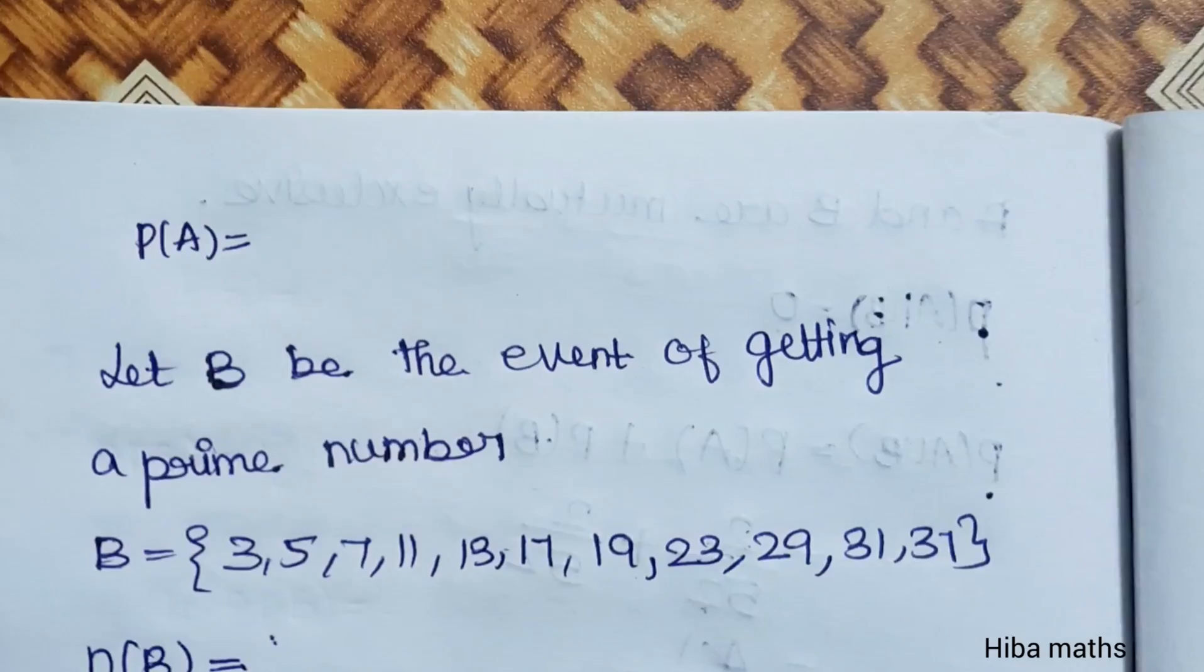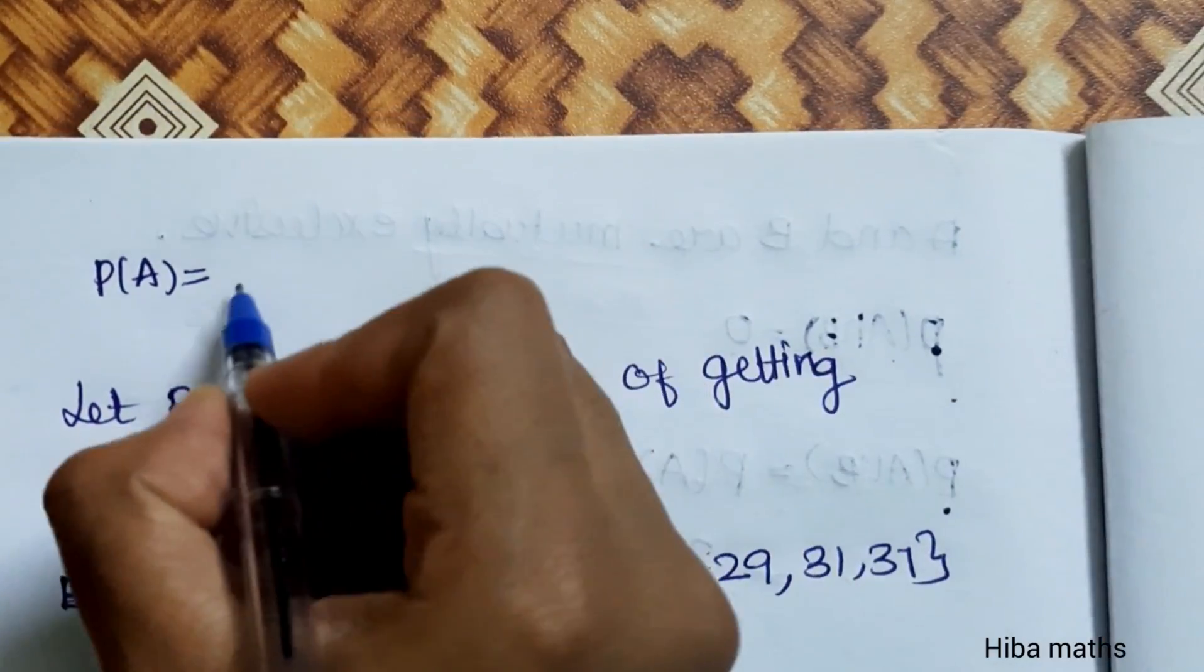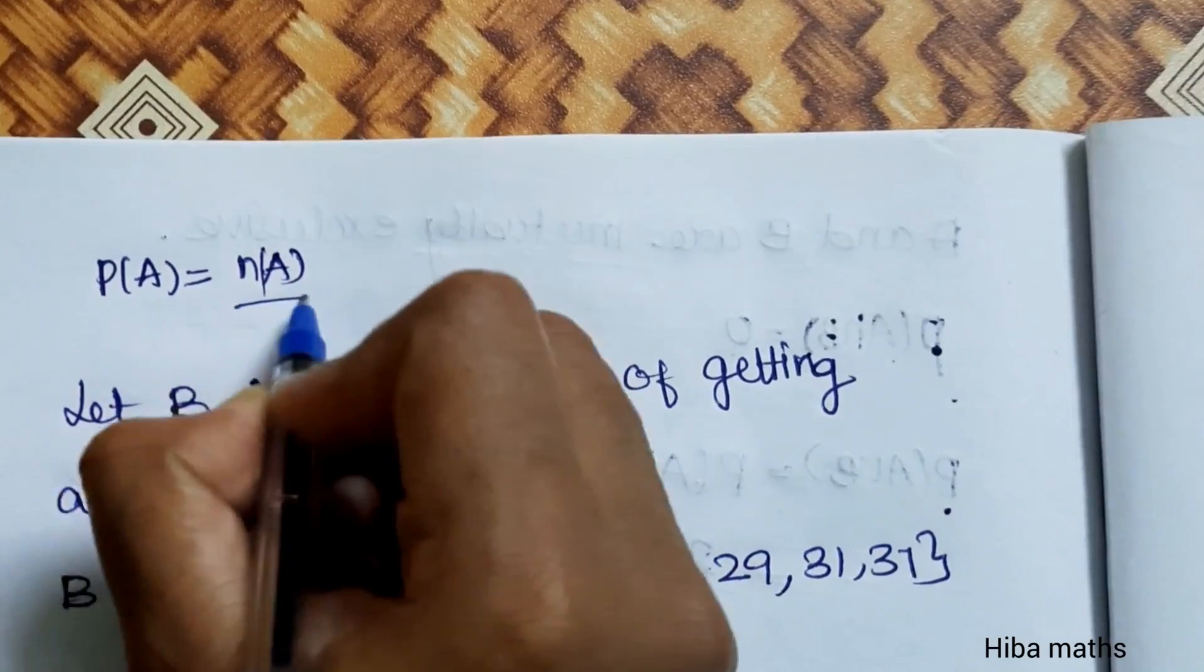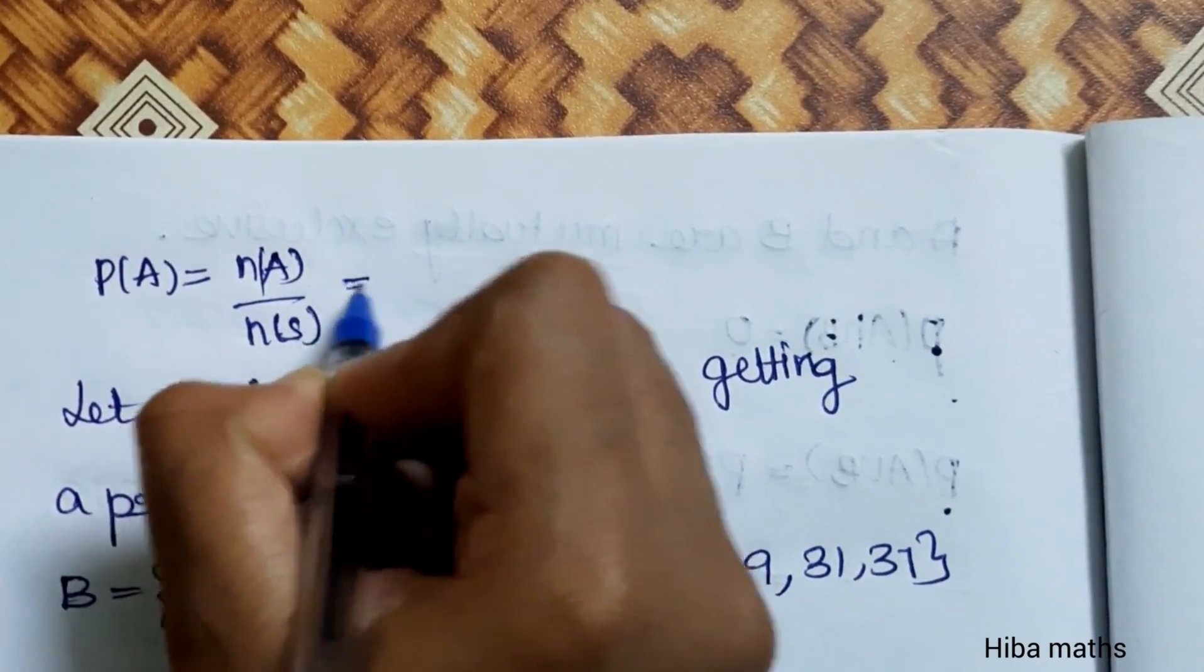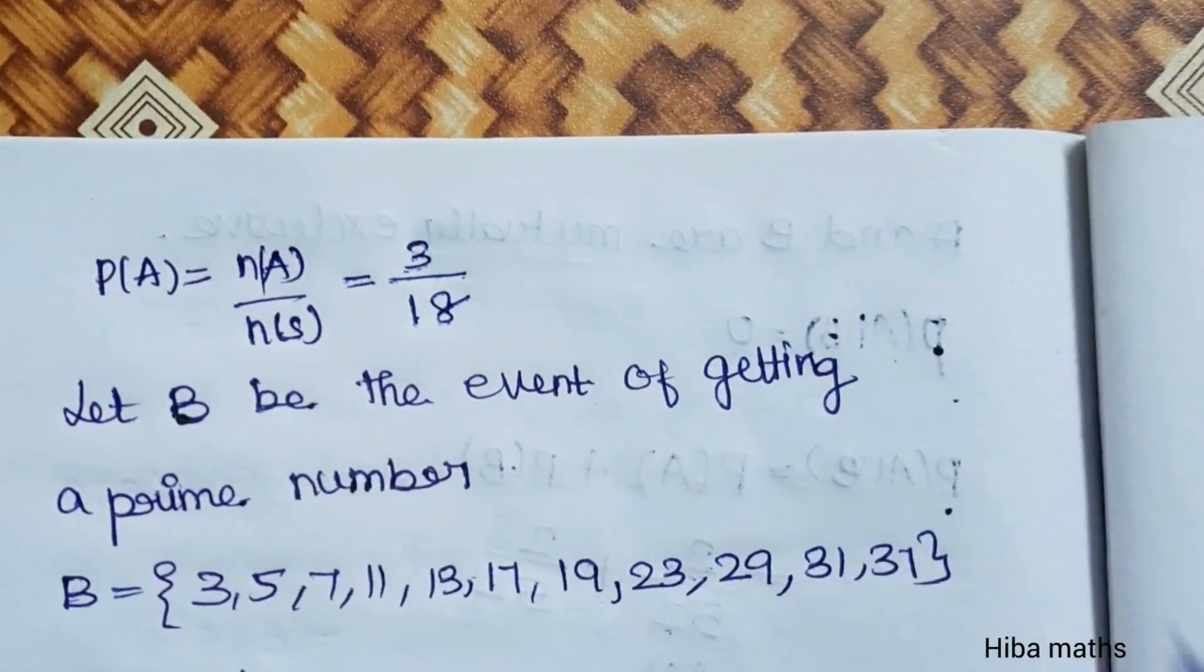Probability P(A) is n(A) by n(S). n(A) is 3, n(S) is 18. So P(A) = 3/18.